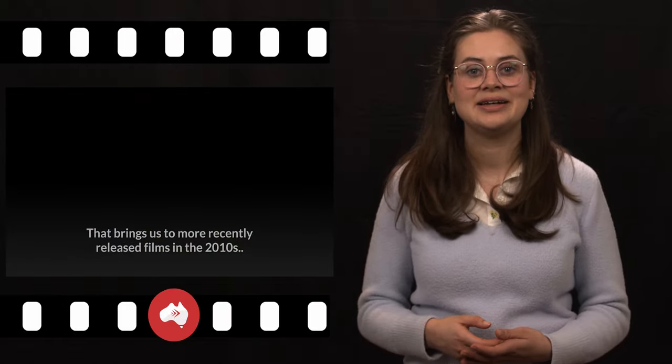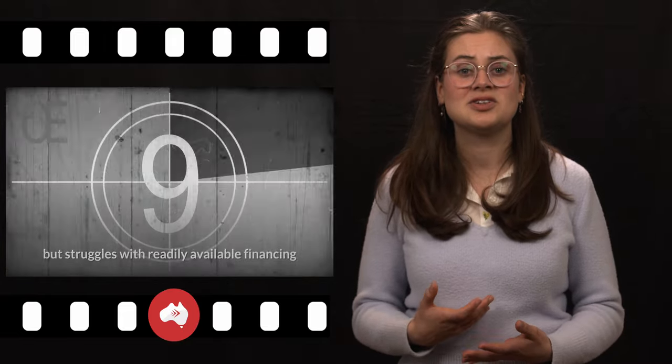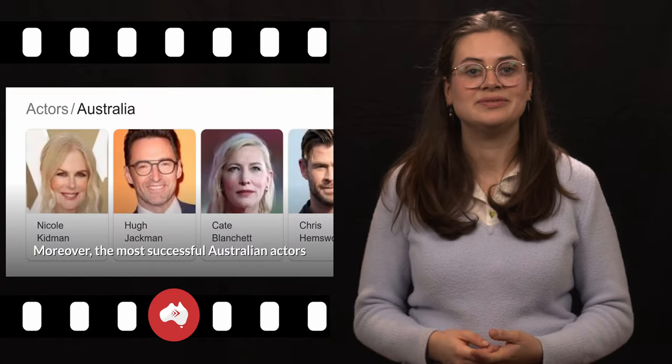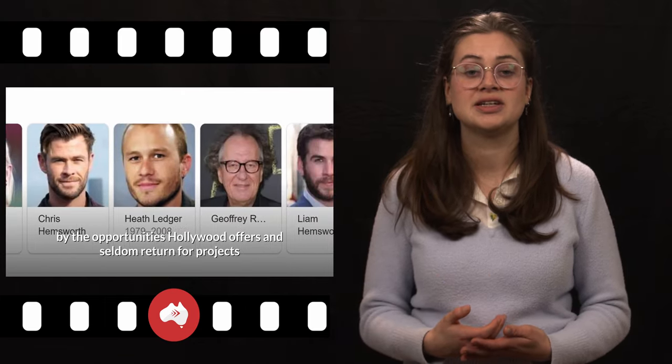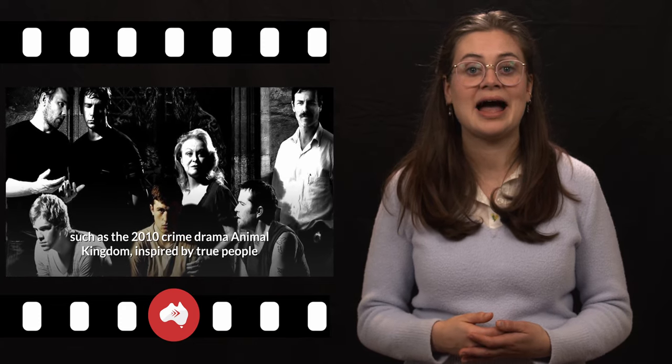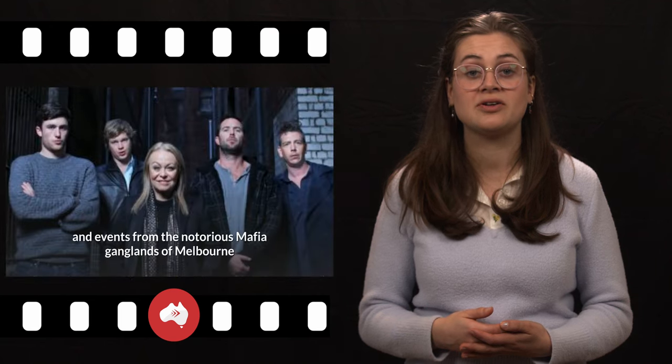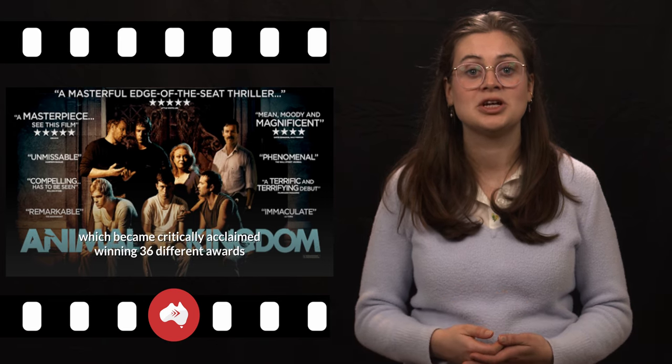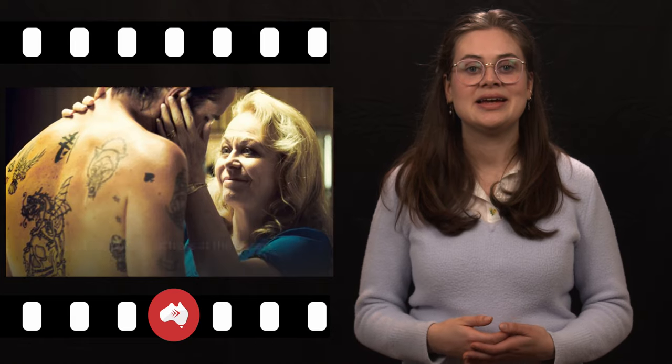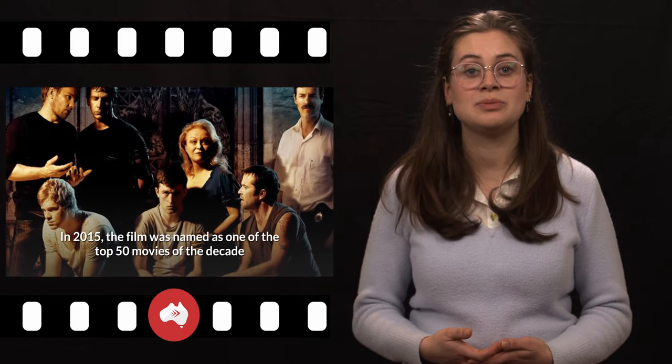That brings us to more recently released films in the 2010s. In the current era, the Australian film industry continues to produce a steady amount of films each year with mixed results, but struggles with readily available financing and to compete with the output of the American market, which is far larger. Moreover, the most successful Australian actors and filmmakers are frequently lured by the opportunities Hollywood offers and seldom return for projects, meaning there are less available experts. Nonetheless, recent quality gems have still forged ahead, such as the 2010 crime drama Animal Kingdom, inspired by true people and events from the notorious mafia gang lands of Melbourne, which became critically acclaimed, winning 36 different awards and receiving 39 nominations, including Best Supporting Actress at the Oscars. In 2015, the film was named as one of the top 50 movies of the decade so far by The Guardian and has since been developed into an American TV series.